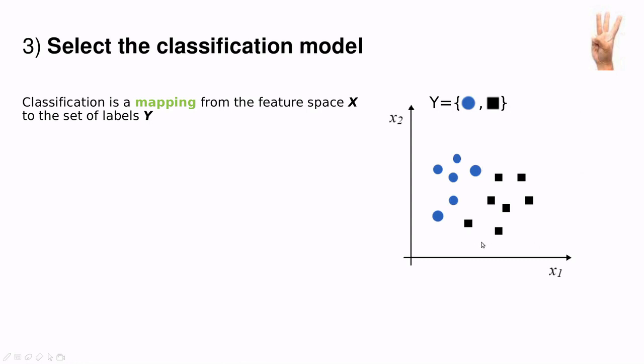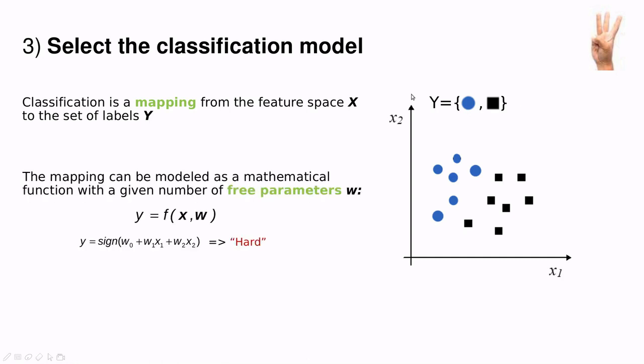Imagine that we have this very small world in which we have a couple of features x1 and x2 and just two outcomes. So either you're a blue circle or a black square. You could understand this as high risk and healthy patient. So basically, choosing a model means that we want to find a function that maps the features with a given set of parameters, also called weights. And this function is a kind of black box and it's going to give us the output y. Let's do an example.